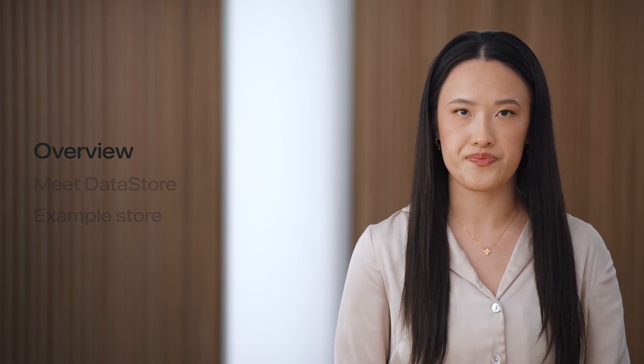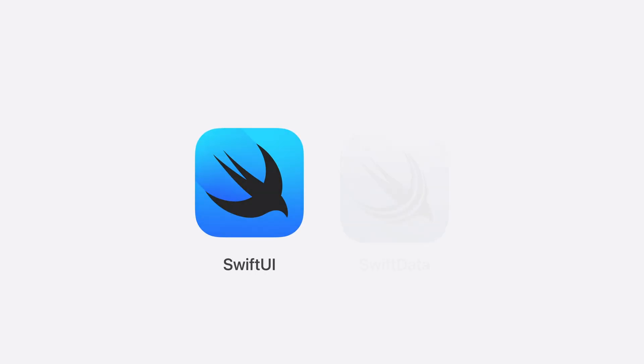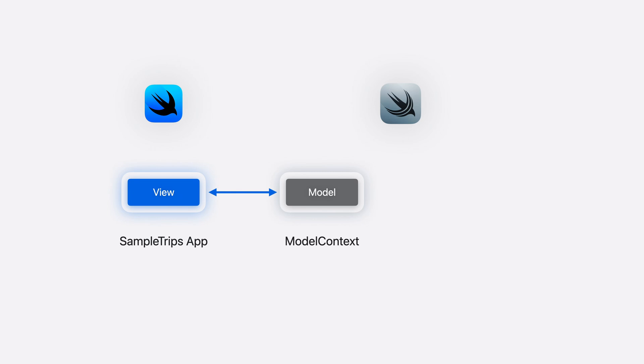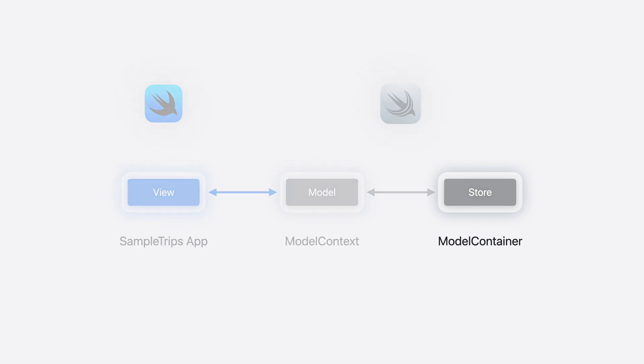At a high level, the store is responsible for fetching and saving all of the data required to support the persistent models. To explore how custom data stores work in Swift Data, I'm going to examine how they provide persistence for my app SampleTrips. SampleTrips is built on the powerful synergy of SwiftUI and Swift Data, and a typical app is composed of three important parts. Swift UI provides the user interface — typically a view like a list or label — that displays data from a model in a model context. The model context reads and writes data using a store in a model container. In this video, I'm going to focus specifically on the role the store plays in Swift Data.